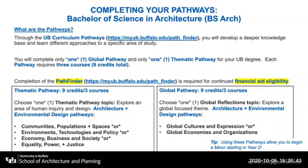In addition to your thematic pathway, you also have a global pathway. There are two global pathways built off of the requirements for the Bachelor of Science in Architecture. Those two global pathways include Global Cultures and Expressions or Global Economies and Organizations.